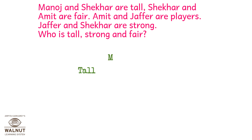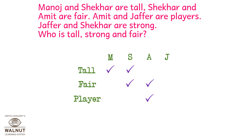Let's write 'tall'. We know that Manoj and Shekhar are tall. Then we write A for Amit and tick Shekhar under 'fair', as Shekhar and Amit are fair. Then we write J for Jafar. Amit and Jafar are players, so we write 'player' and tick Amit and Jafar. Then we write 'strong' — Jafar and Shekhar are strong, so we write Jafar and Shekhar.